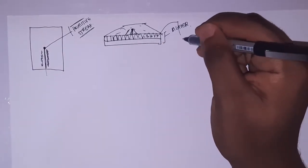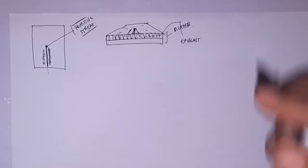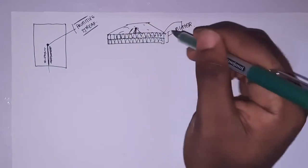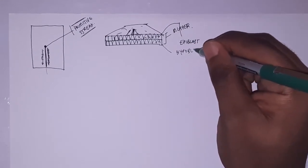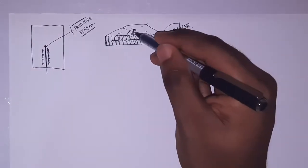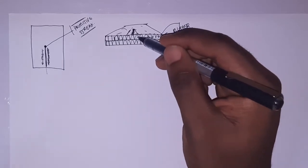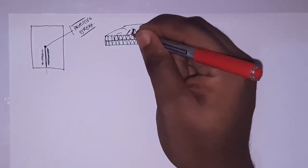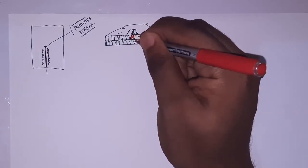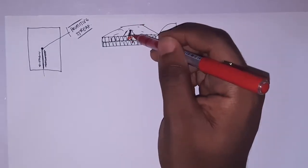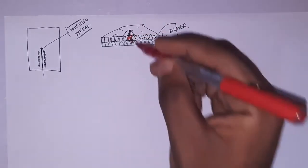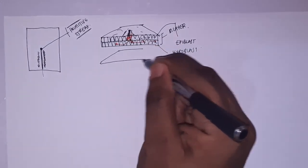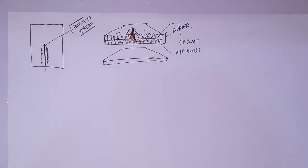The top layer is called the epiblast and the bottom layer is called the hypoblast. Now, from this primitive streak in the center, a new layer of cells comes down and replaces the hypoblast layer, such that you now have a new arrangement of layers.